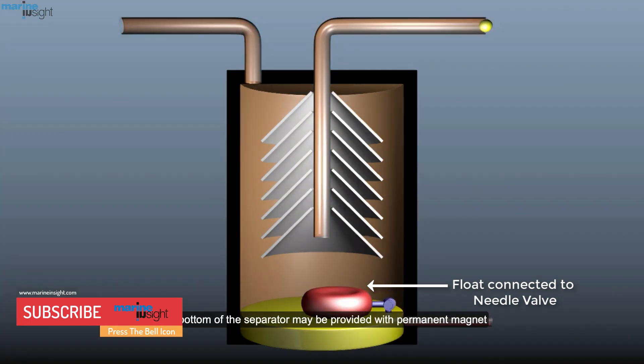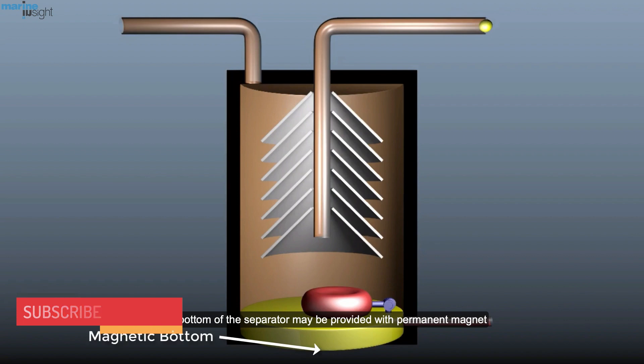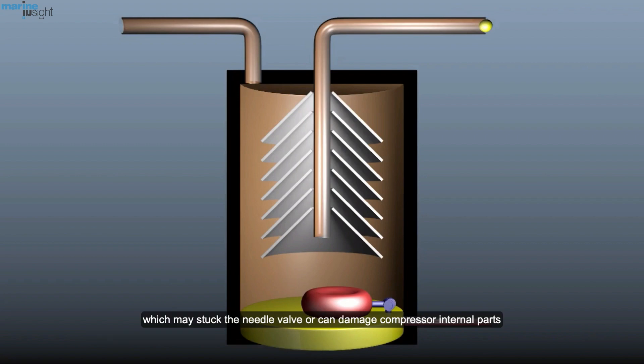The bottom of the separator may be provided with permanent magnet which will hold all the metallic impurities, which may stuck the needle valve or can damage compressor internal parts.